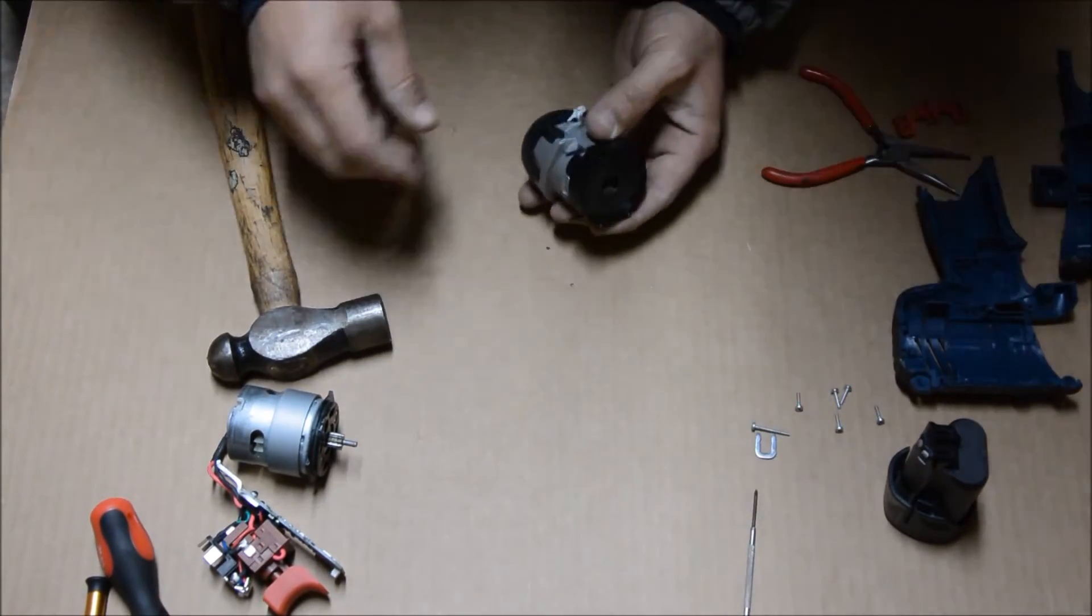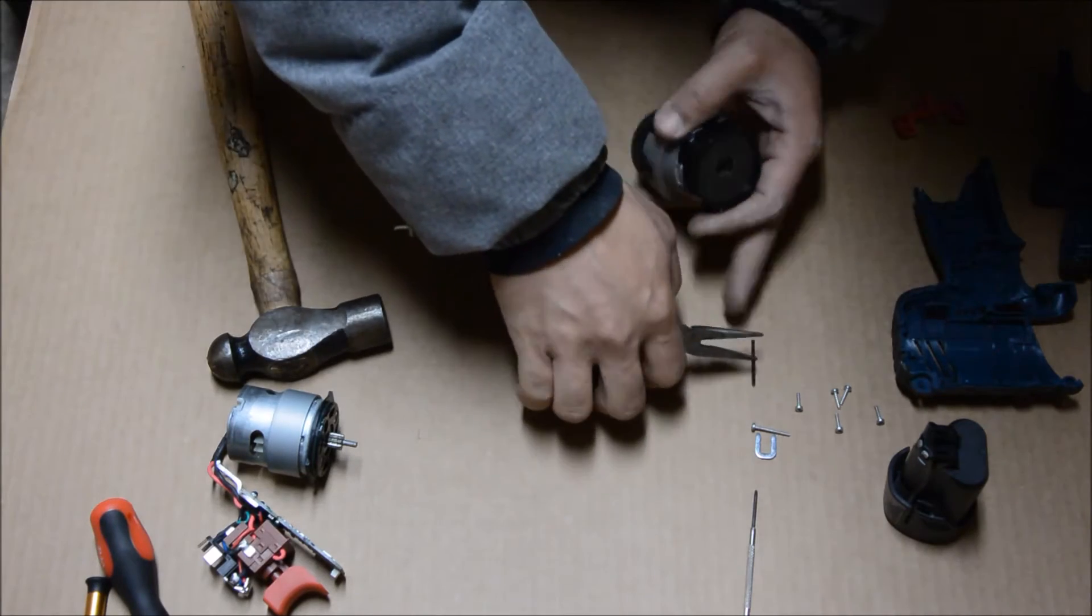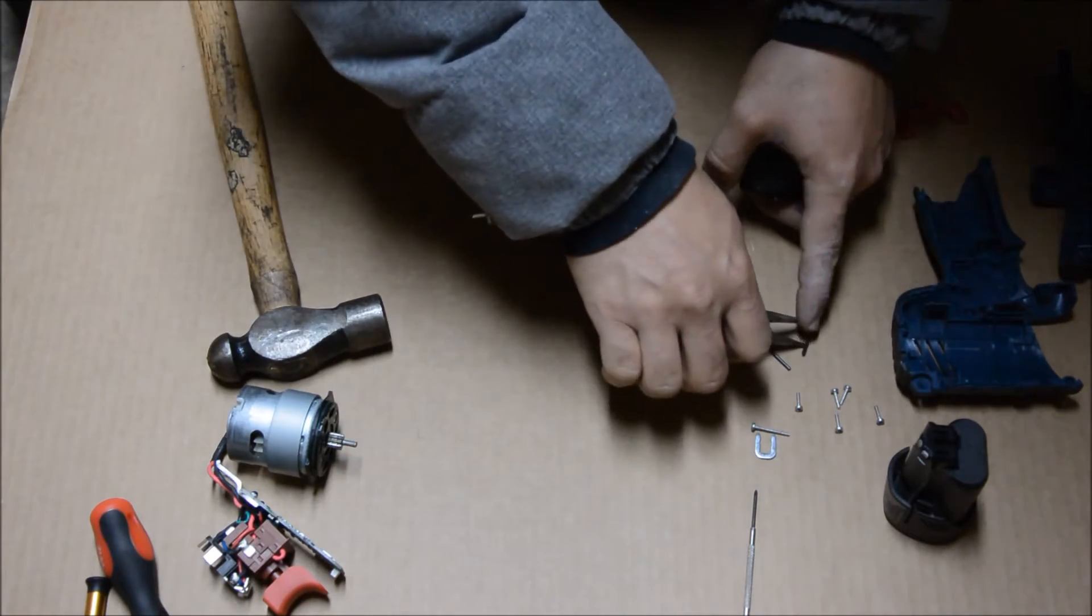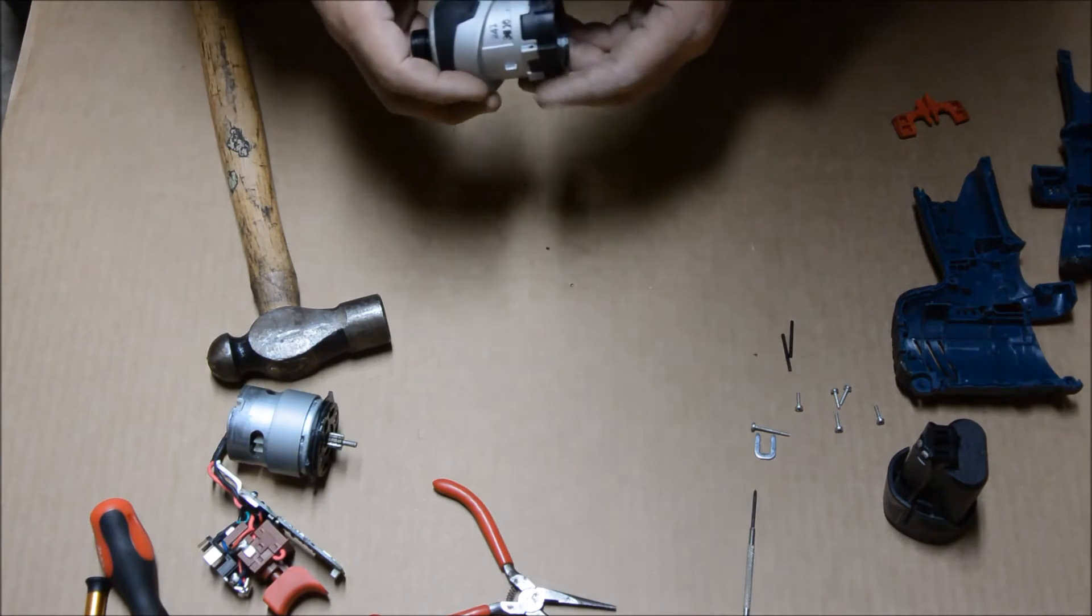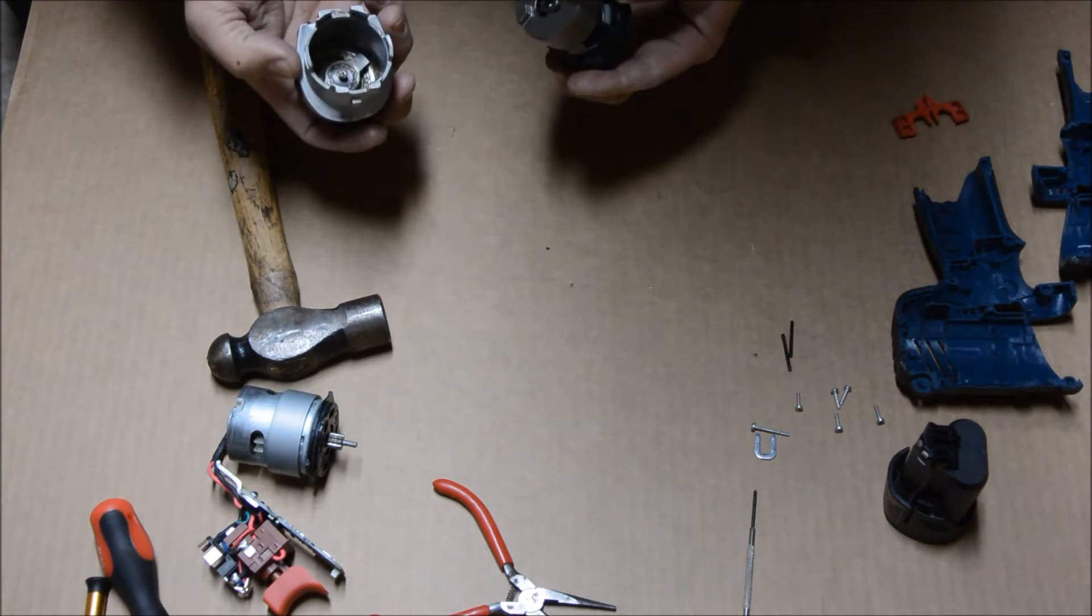Now once those pins are pushed out, we'll take the set of pliers and pull them out the rest of the way. My pliers seems to be magnetized. They want to stick to it. Once that's pushed out, we're going to go ahead and lift the transmission half back and there you go.